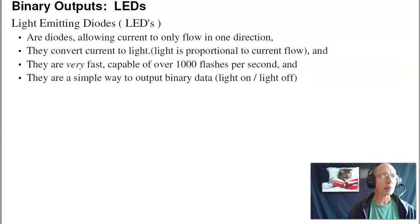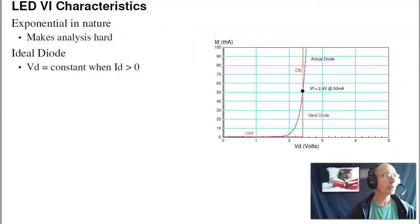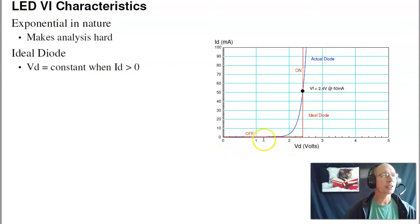The thing to remember about LEDs is they're diodes — light emitting diodes. Diodes only allow current to flow one way, so it does matter how you connect them. The VI characteristics for a diode are non-linear, which makes analysis hard. As you increase the voltage across the diode, nothing happens — then suddenly you get current flow. That's just how diodes work, and likewise for LEDs.